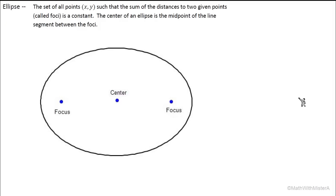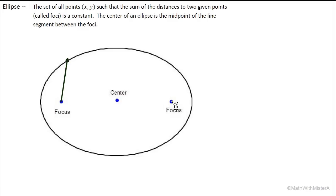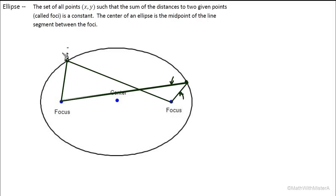The ellipse is defined as the set of all points such that the sum of the distances to two given points called foci is a constant. The center of an ellipse is the midpoint of the line segment between the foci. The ellipse is made by finding points where the sum of the distances to the foci is constant — the sum of a straight line from the point to one focus and a straight line to the other focus will equal the same for any point on the ellipse.